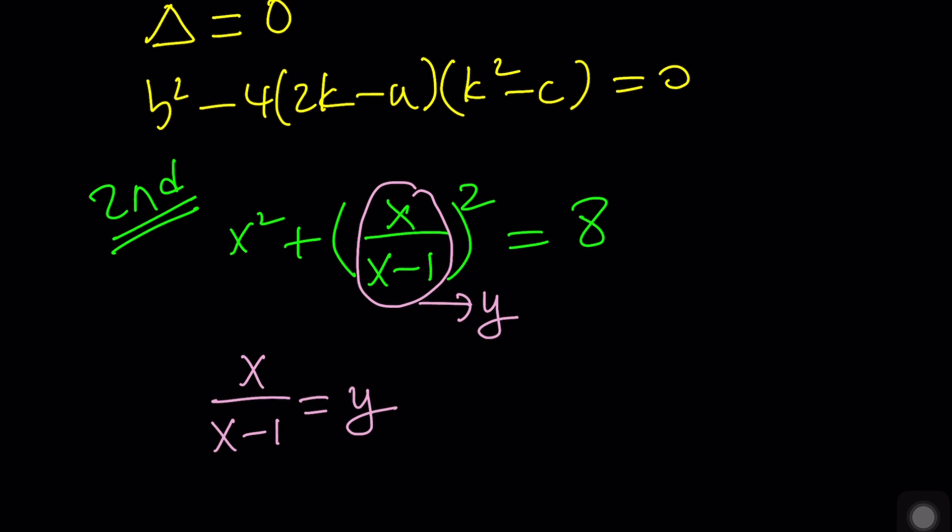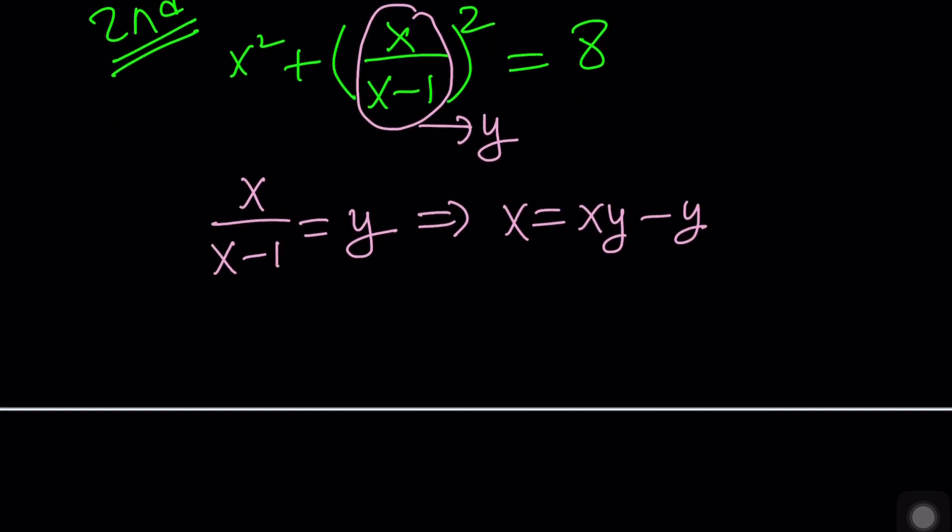Let's go ahead and cross-multiply here. X equals XY minus Y. Let's put the X and Y on the same side. X plus Y equals XY. Nice. Let's go ahead and save this.